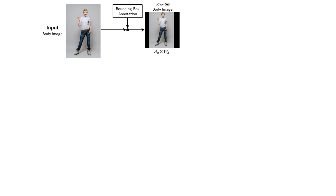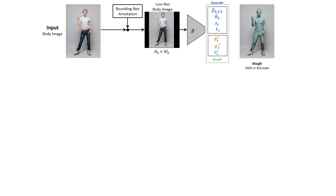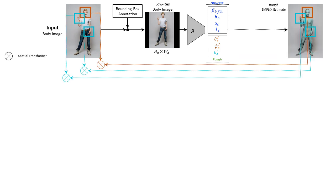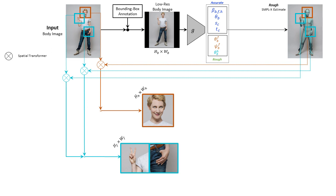We start from the bounding box of a person, extract a body image crop and downscale to a deep net compatible resolution. We feed this to the body network and obtain a reasonable body pose estimate and a rough estimate for the face and hands. Based on the location of the face and hands, EXPOSE goes back to the original image and extracts higher resolution image patches for them. This process is done with a spatial transformer and is thus fully differentiable.